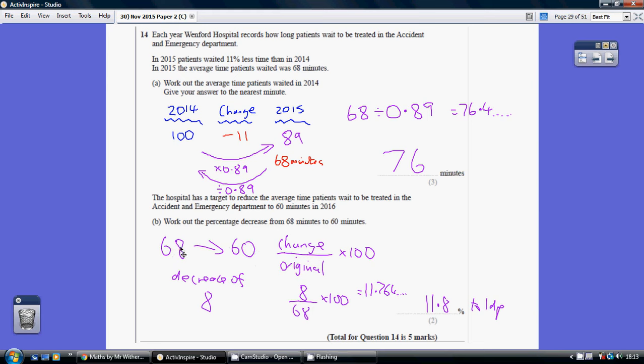I think you just need to learn that to work out a percentage increase or decrease, you look at the change. So that's 8 divided by the original, which is 68, multiplied by 100 to turn it into percentage. So 8 divided by 68 times 100, which is 11.764% or 11.8 to one decimal place.